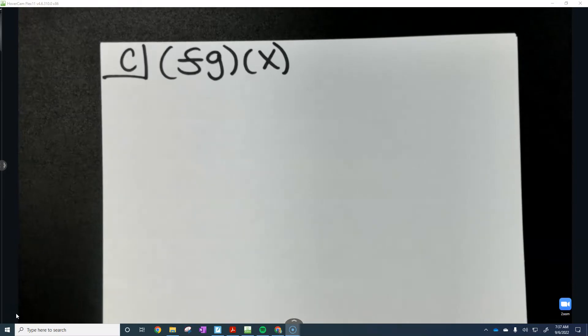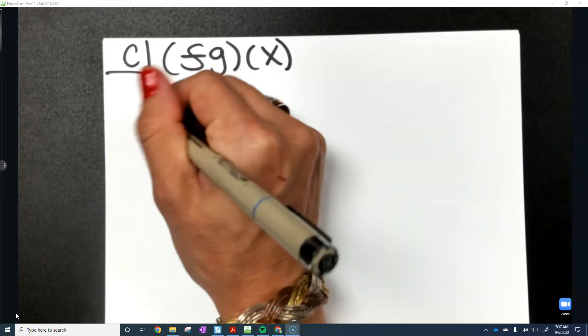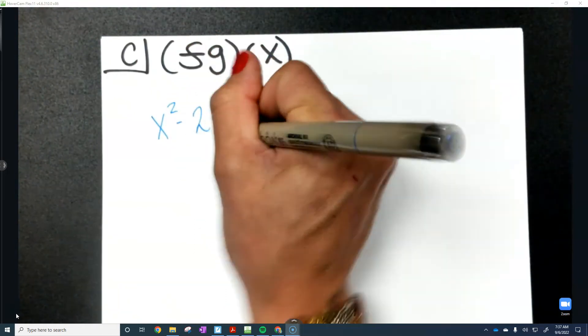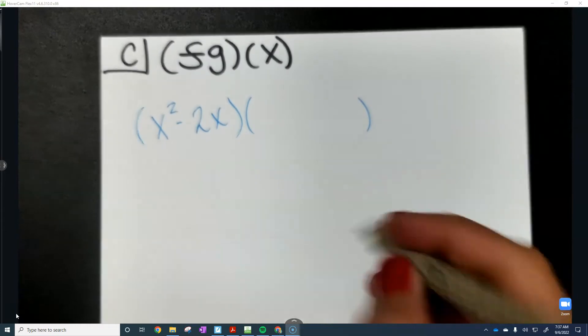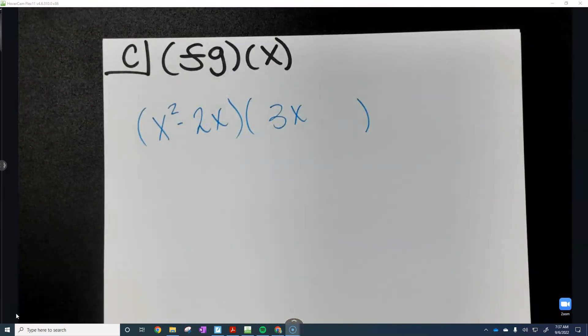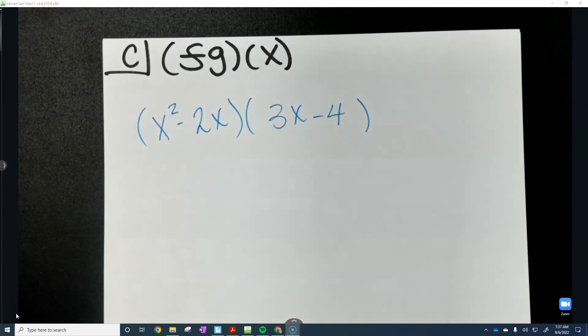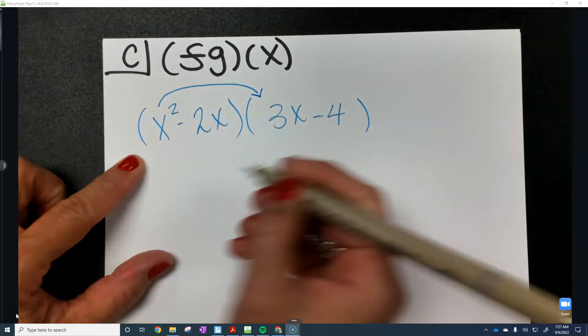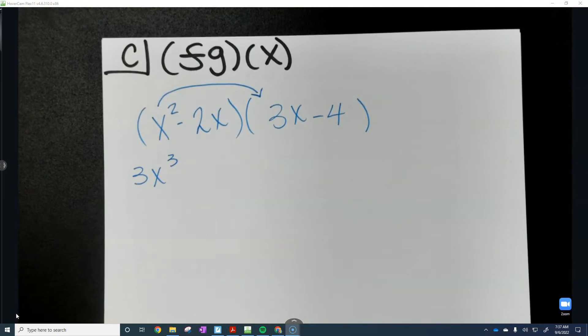So for problem c, we're going to multiply them together. This time, we're only multiplying f and g. So remember, f was x squared minus 2x, and we're going to take that expression and we're going to multiply it by g. And g was 3x minus 4. So you're just going to foil and combine like terms here. So when you multiply the first two terms together, remember, that's going to be 3x to the third power.